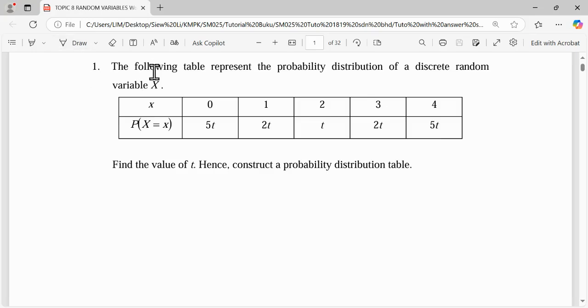Hi everyone! For this question, they say the following table represent the probability distribution of a discrete random variable x. So we have random variable 0, 1, 2, 3, 4 and its respectively probability.